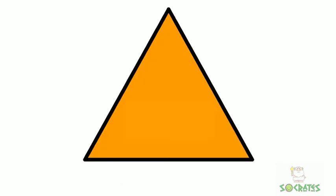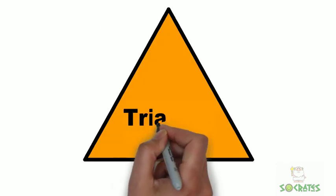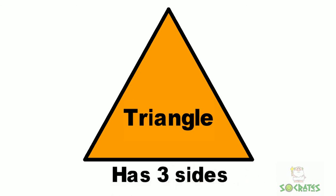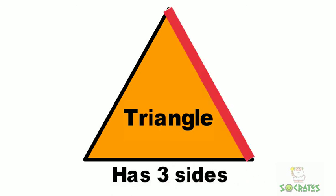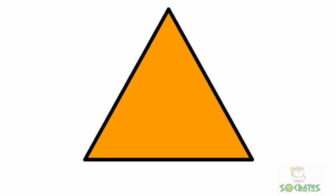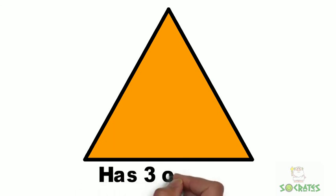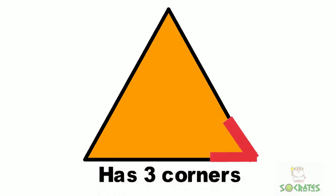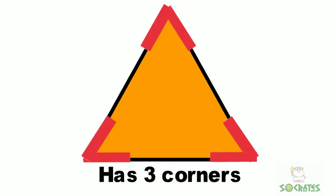Let's look at a triangle. A triangle has three sides — one, two, three. And a triangle has three corners — one, two, three.